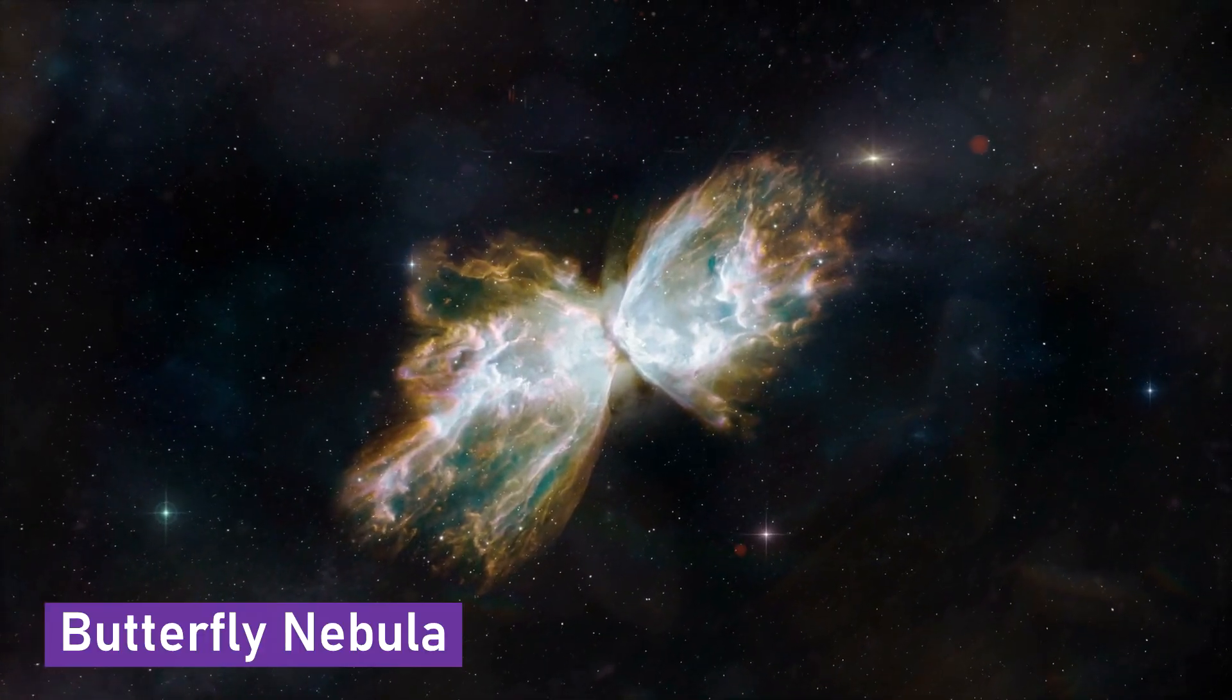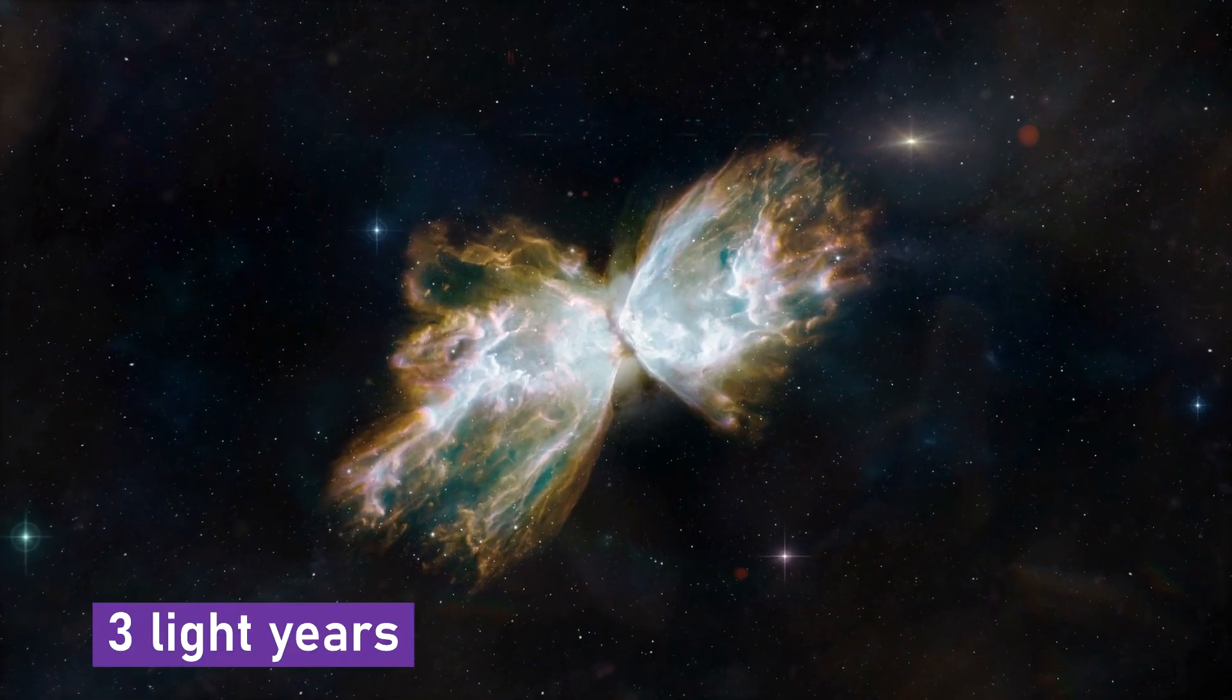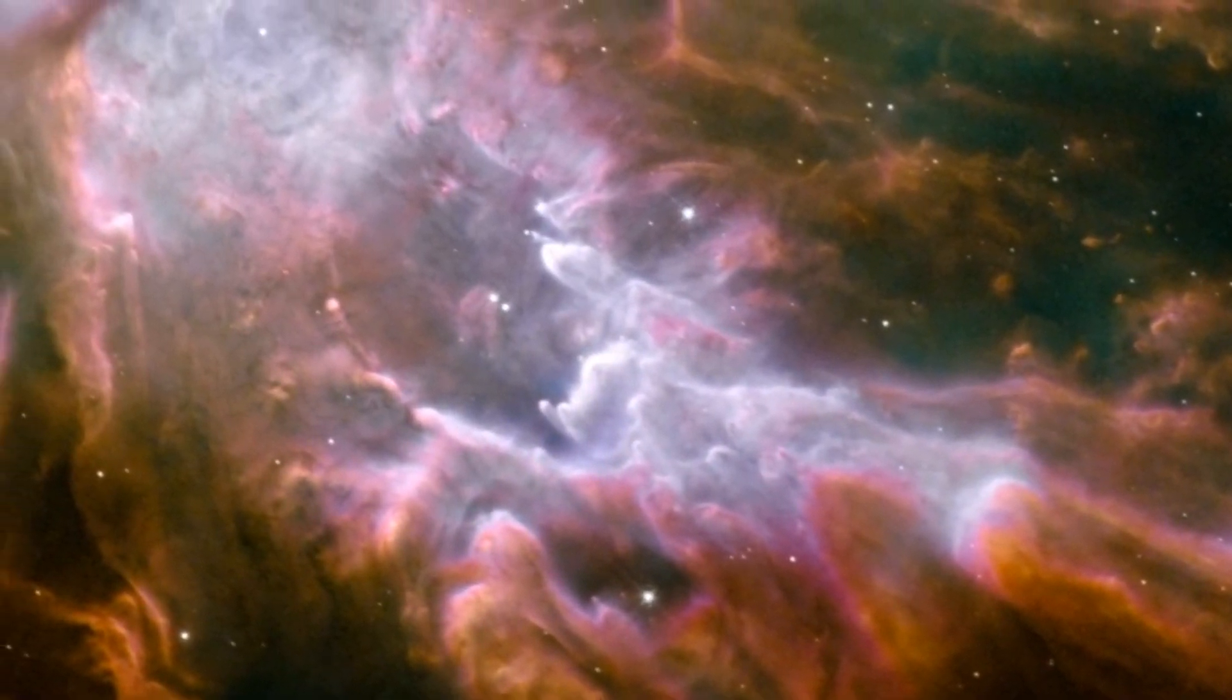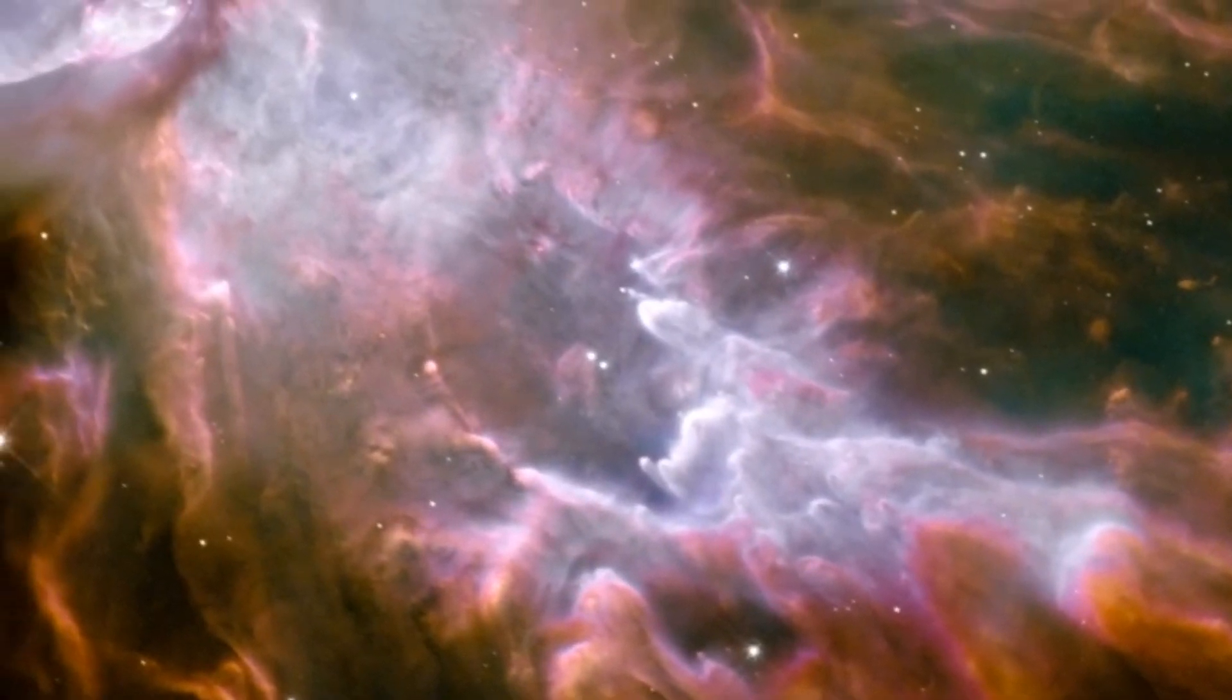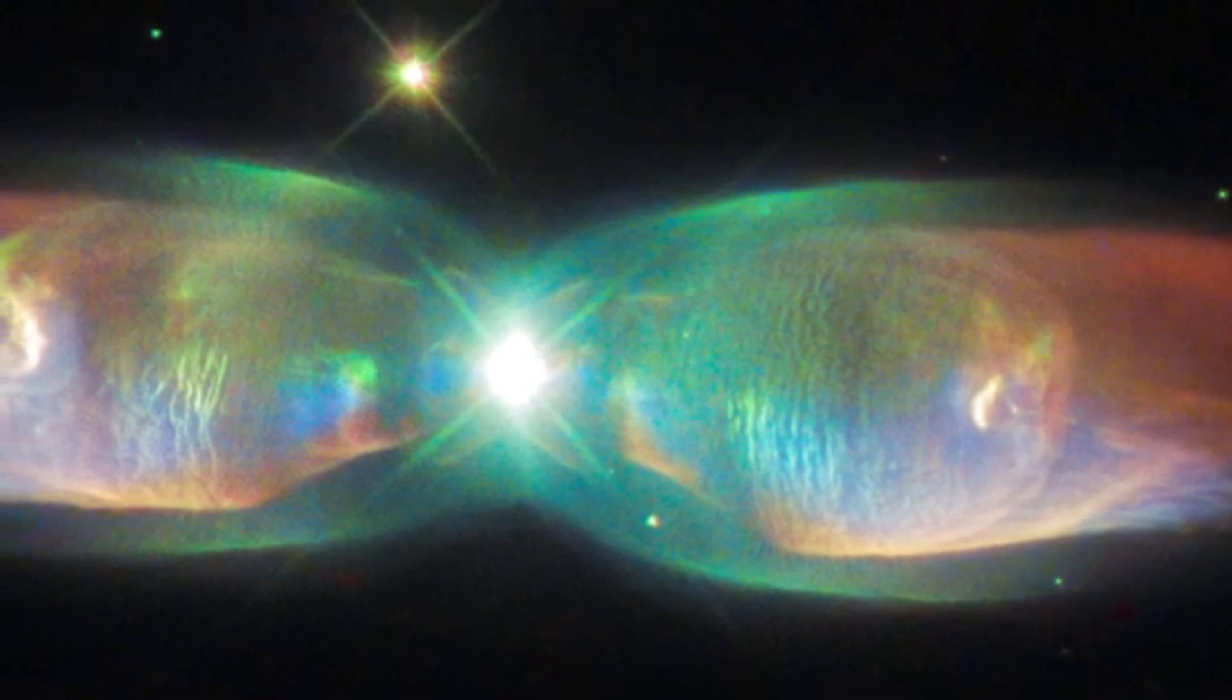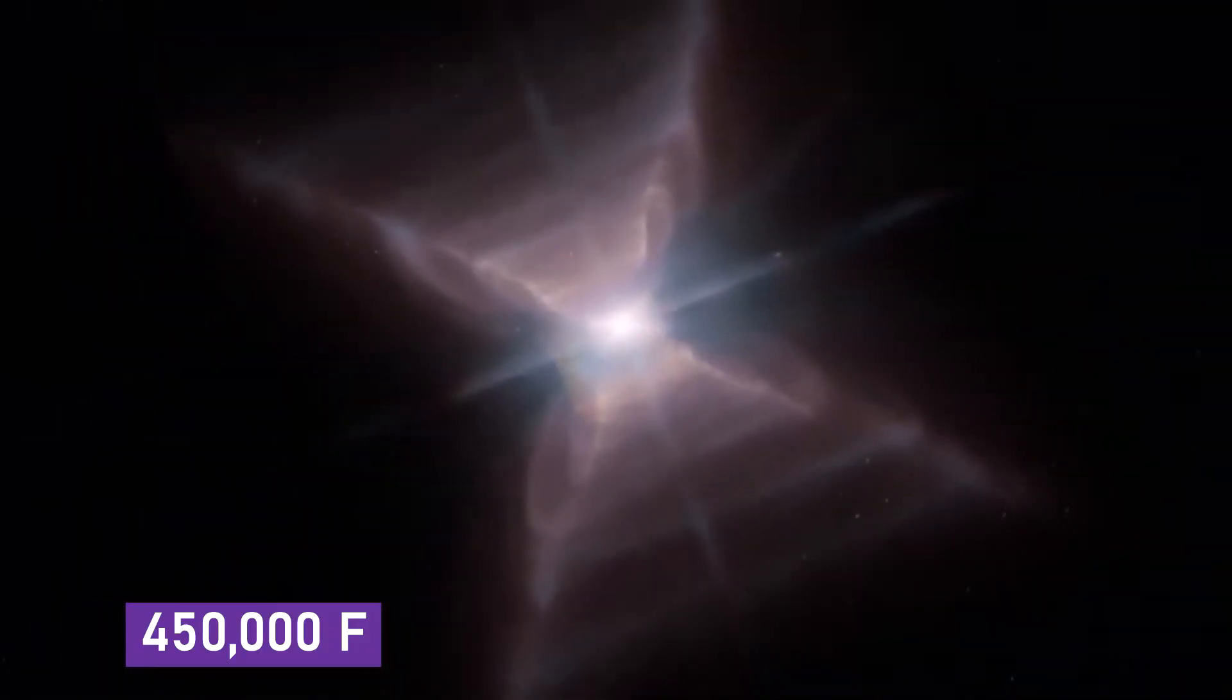The Butterfly Nebula spreads its wings greater than 3 light-years across, and the structure found within this nebula is among the most complex that has ever been studied. The central star of the nebula is a white dwarf heated to an amazing 450,000 degrees Fahrenheit.